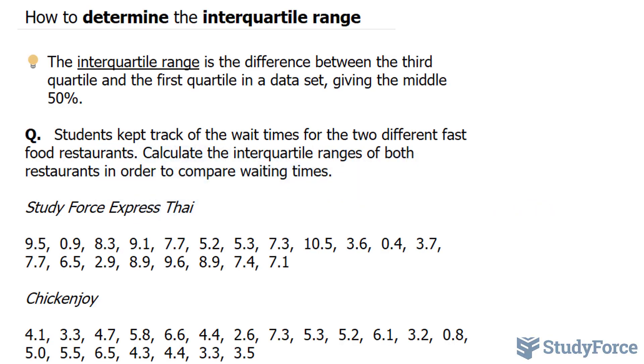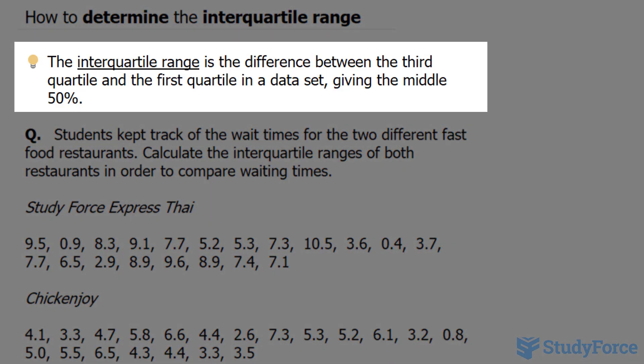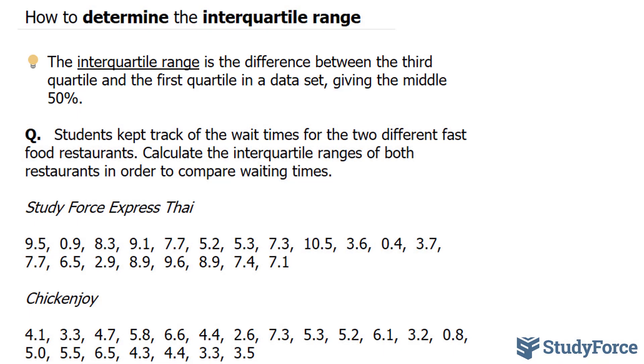In this video, I'll show you how to determine the interquartile range. Starting with a quick definition, the interquartile range is the difference between the third quartile and the first quartile in a data set, giving the middle 50%.